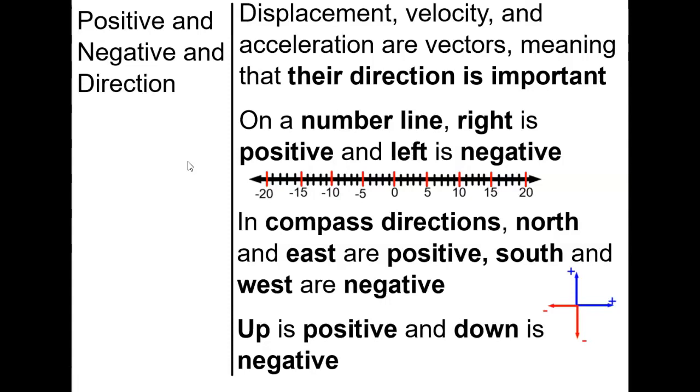Distance and speed are scalars. Time is a scalar. You can't have negative time; that's not how this works. So direction is important for anything that is a vector quantity.